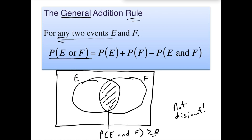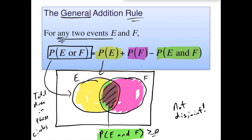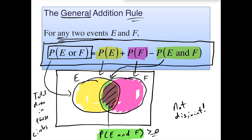If I want the probability of one event or the other, that's represented by all the area inside both circles. If I add the probability of E, I get the entire circle of E. If I then add the probability of F, I get the entire circle of F. But the middle region — the probability of E and F — gets added twice, so I need to subtract it once. The probability of E or F equals the probability of E plus the probability of F minus the probability of E and F.